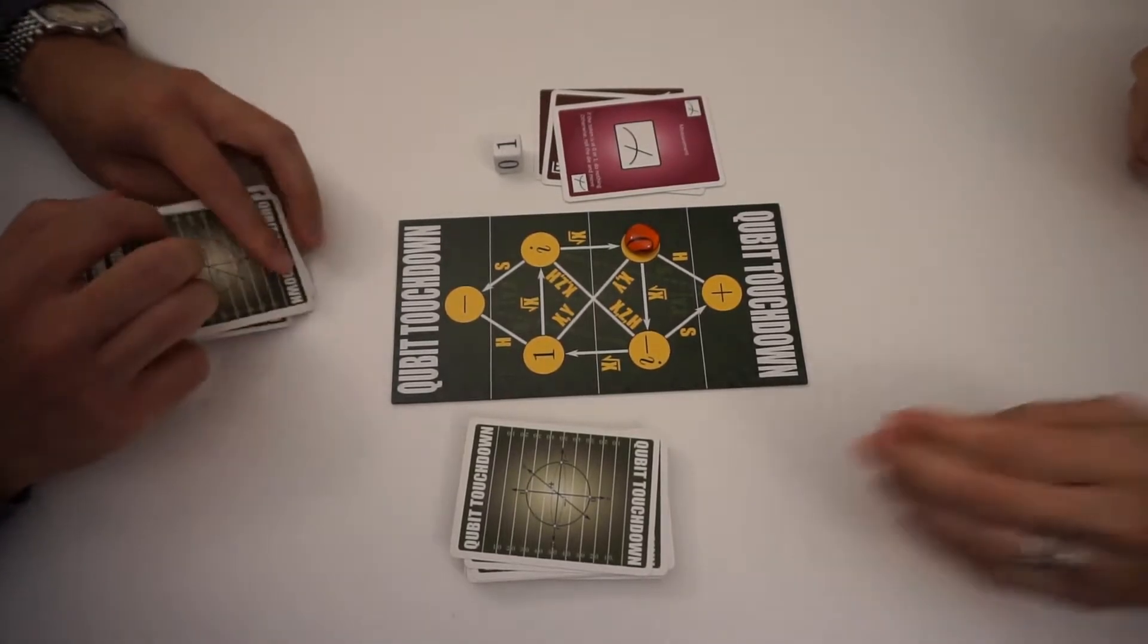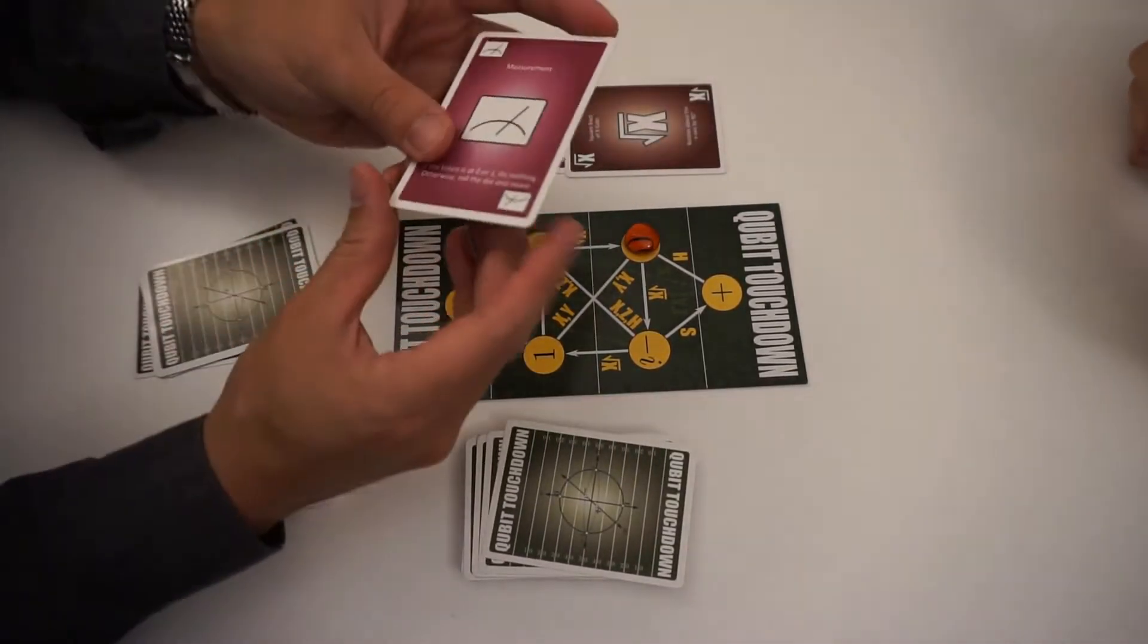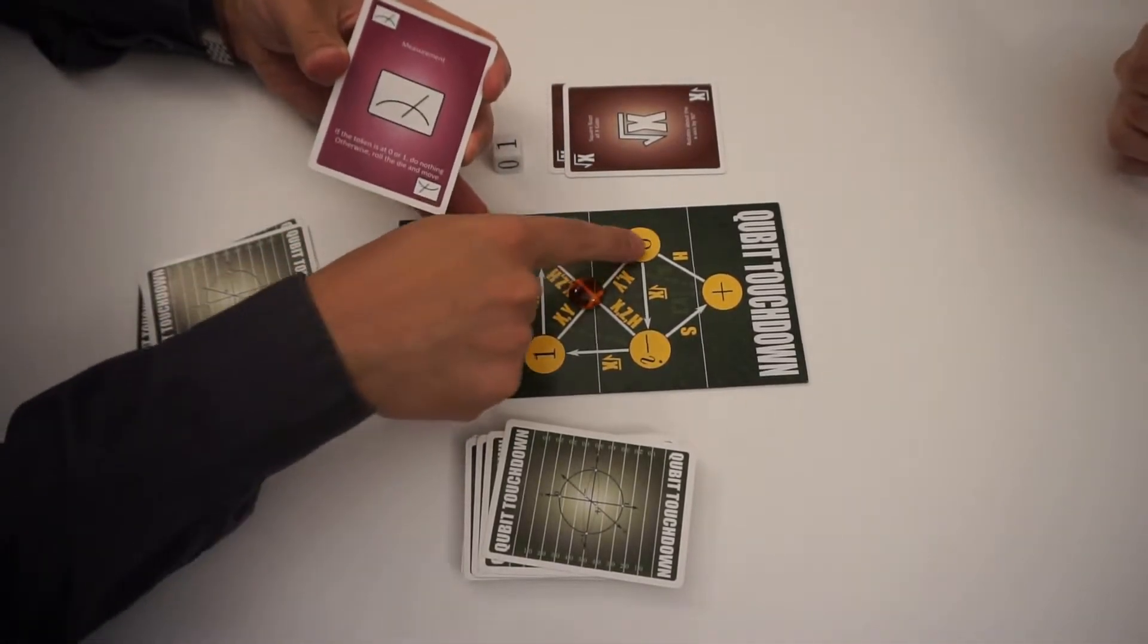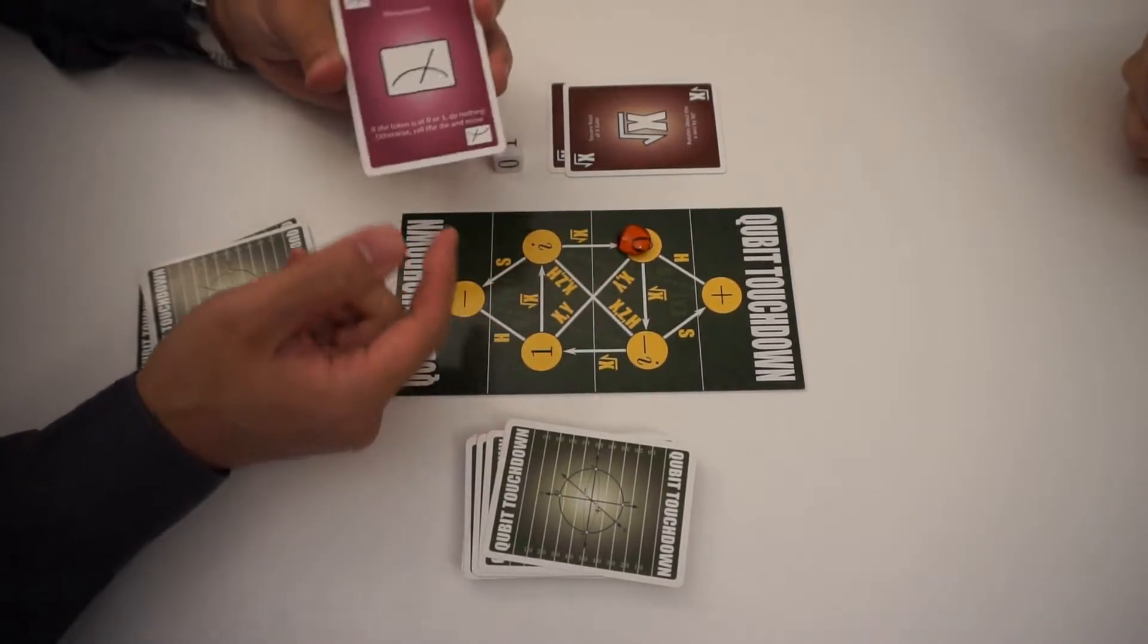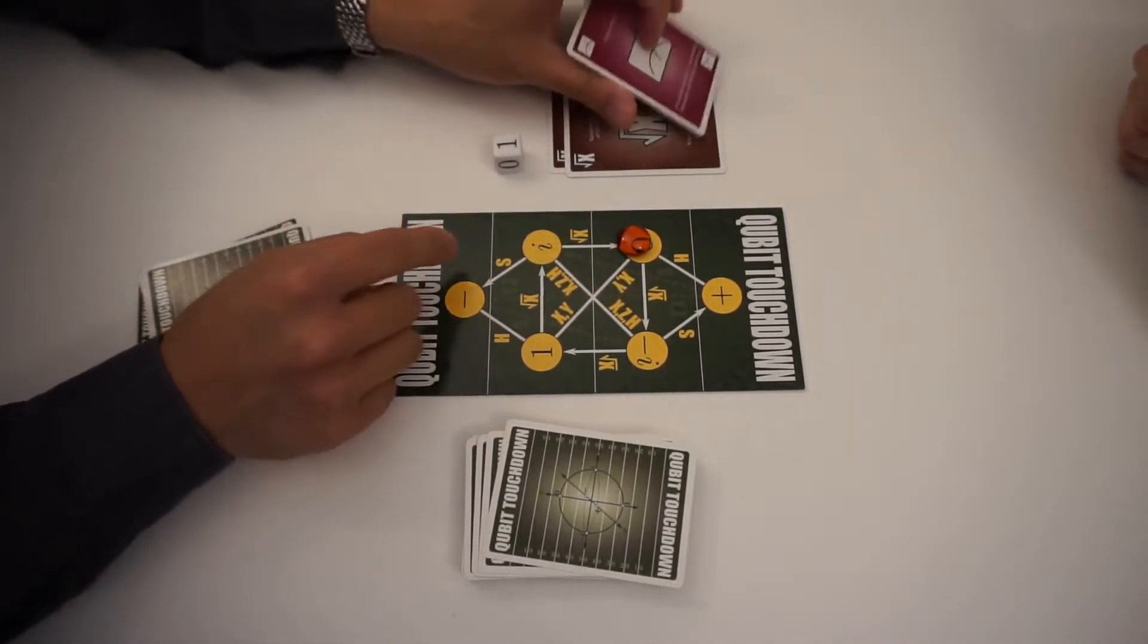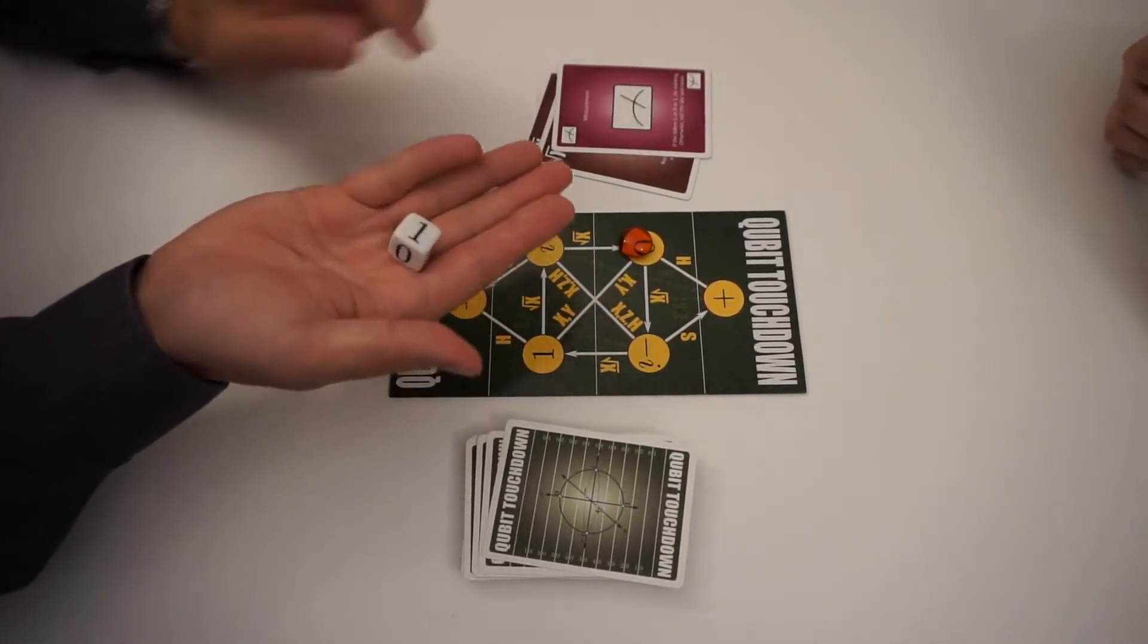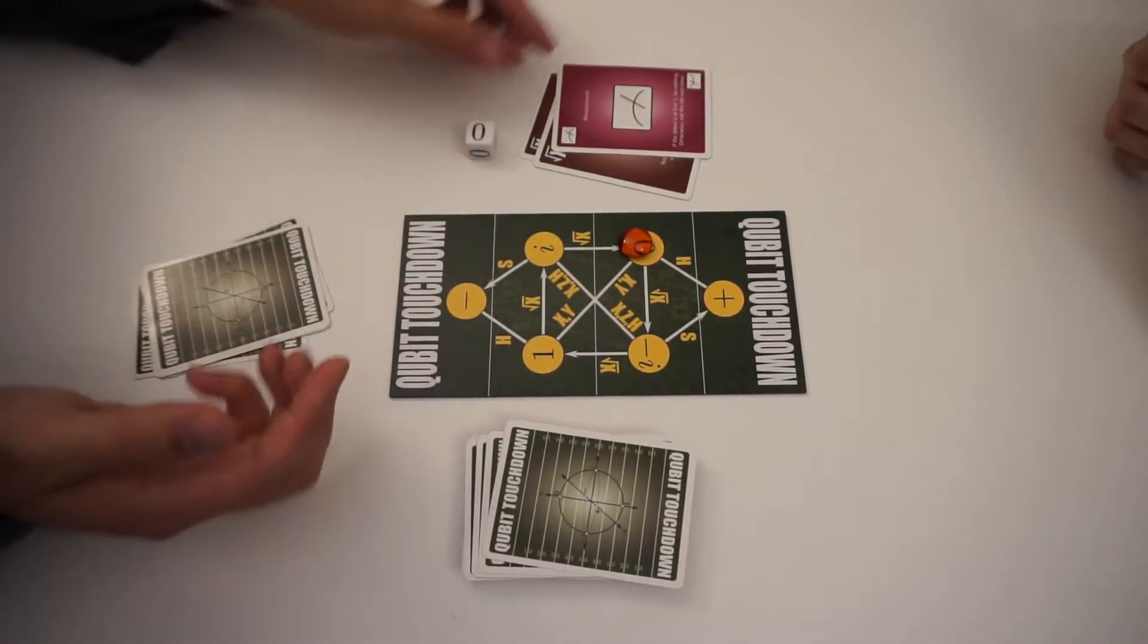So the measurement card is a little different. So if you look at this, it actually has the directions down here. If the football token is at zero or one, then nothing happens. So in this case, nothing happens. Otherwise, say the football is at I or minus I, what you do is you roll the die and then you move the ball to zero or one.